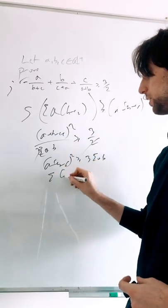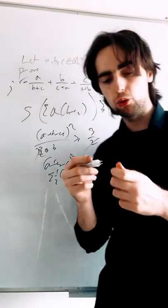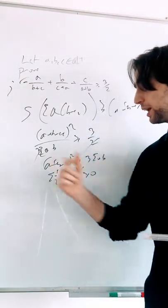Well, it transforms into the cyclic sum of A minus B squared. A half of that greater than or equal to 0. This is true. And so we are done. Equality when A equals B equals C.